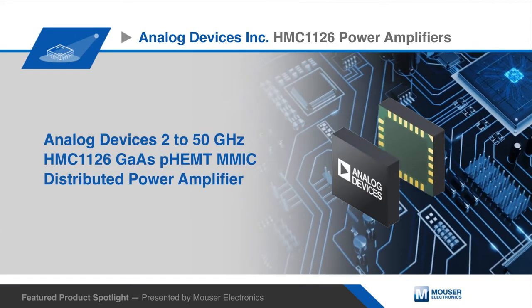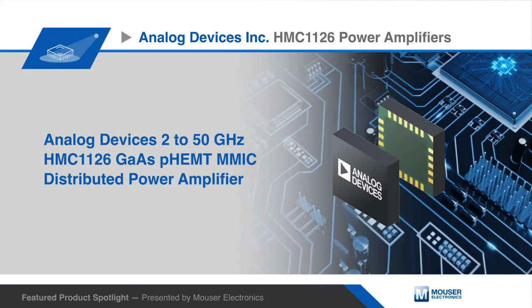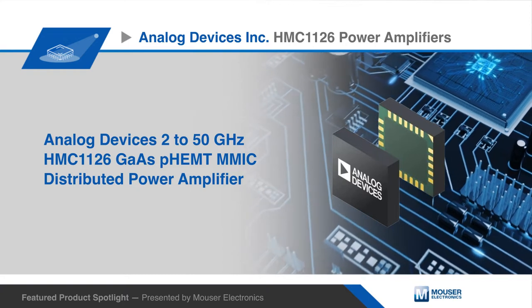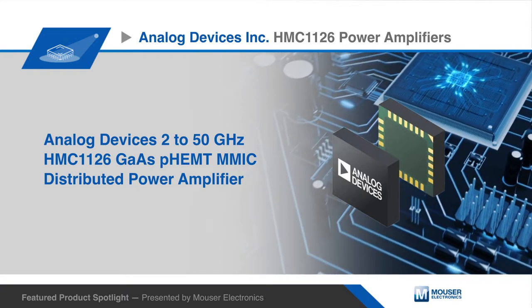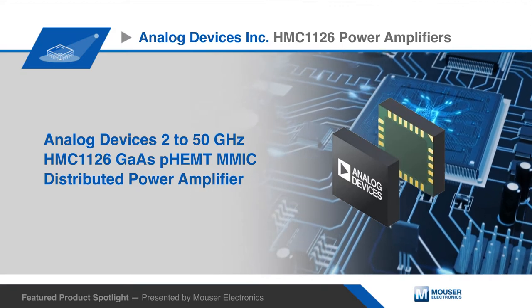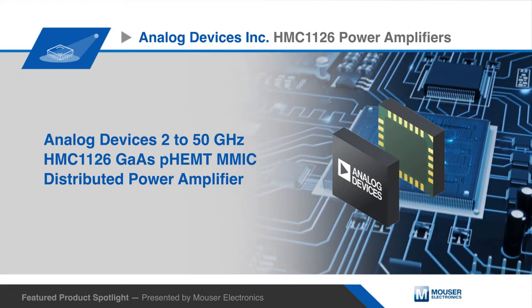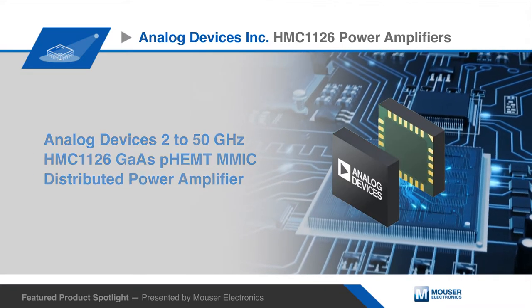The HMC1126 is a Gallium Arsenide Pseudomorphic High Electron Mobility Transistor Monolithic Microwave Integrated Circuit or MMIC distributed power amplifier that operates from 2 GHz to 50 GHz.